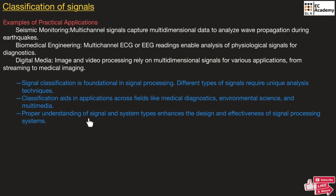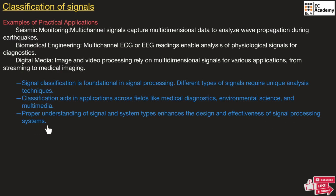The proper understanding of signal and system type enhances the design and effectiveness of signal processing systems. By understanding the type of signal and the type of system, we can improve the design and effectiveness of signal processing. This is about the classification of signals. Hope you have understood the topic. Thank you.